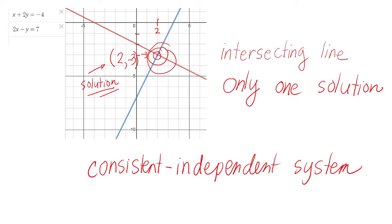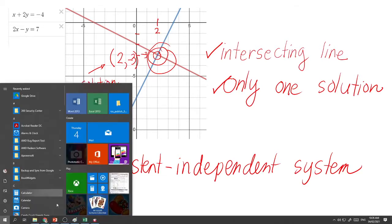A consistent, independent system has only one solution and the graph is simply intersecting lines. Next, let's look at another example.